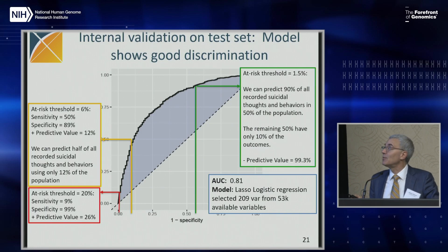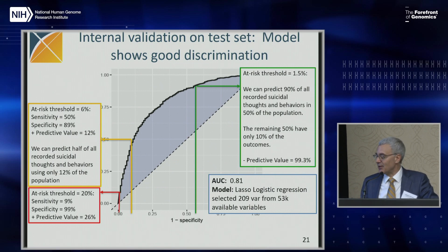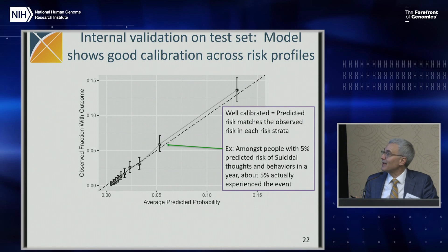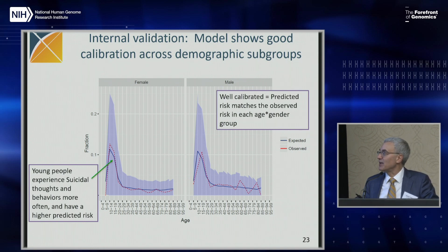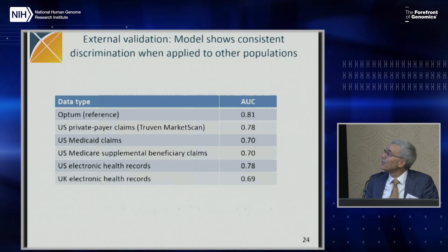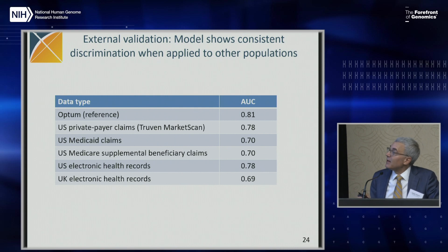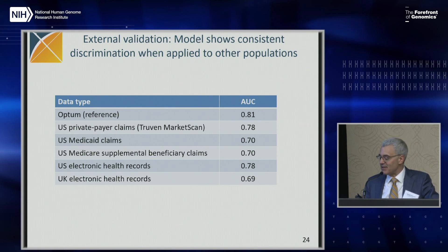For evaluation, we use AUC curves and look at calibration. We also look at subpopulation calibration, stratifying by age and sex, and showing that predictions match observed outcomes fairly well. Very importantly — and this is something Odyssey can uniquely supply — we do cross-verification across many databases.